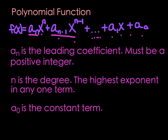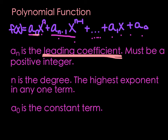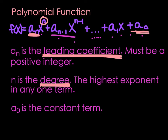A few more vocabulary words. A sub n — that first coefficient — is the leading coefficient. Whenever you put your polynomial in standard form with the highest power first, the coefficient that goes with it is the leading coefficient. The n is the degree — the highest exponent of any one term in the polynomial. And a sub 0, the last term, is the constant term — it doesn't have an x with it and won't change no matter what x is.